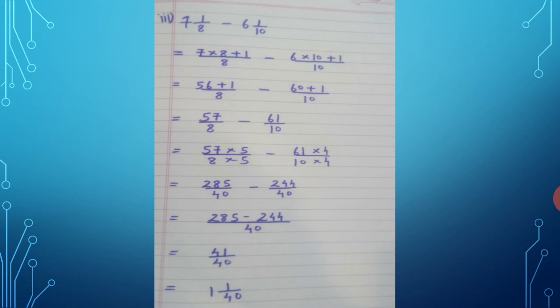The denominators are 8 and 10. You could cross multiply to get 80, or check common multiples: 8 × 5 = 40 and 10 × 4 = 40, so 40 is common to both. Multiply 57 upon 8 by 5, and 61 upon 10 by 4, to get denominator 40. Keep the minus sign — we are subtracting.